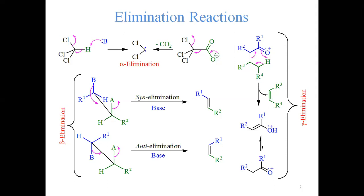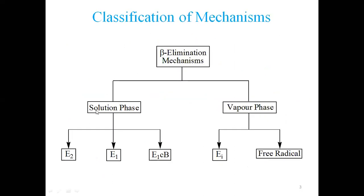Beta elimination may be syn elimination, where the two leaving groups are eclipsing each other at zero degrees to each other. If both leaving groups are at 180 degrees to each other, that is anti elimination. Both conditions involve a pi bond phase, and this is the focus of beta elimination.